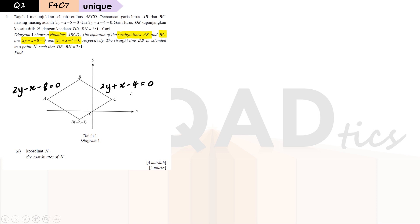Both lines have their own equations. The question also says that straight line DB is not drawn in the diagram, so we imagine drawing a line joining points D and B. This line extends to point N, meaning it exceeds the rhombus. The line extends beyond the polygon until it reaches point N. How far it reaches point N depends on the ratio given, which is DB to BN equals 2 to 1 — meaning D to B is 2 parts and B to N is 1 part. So in part A, how can we find the coordinates of N?